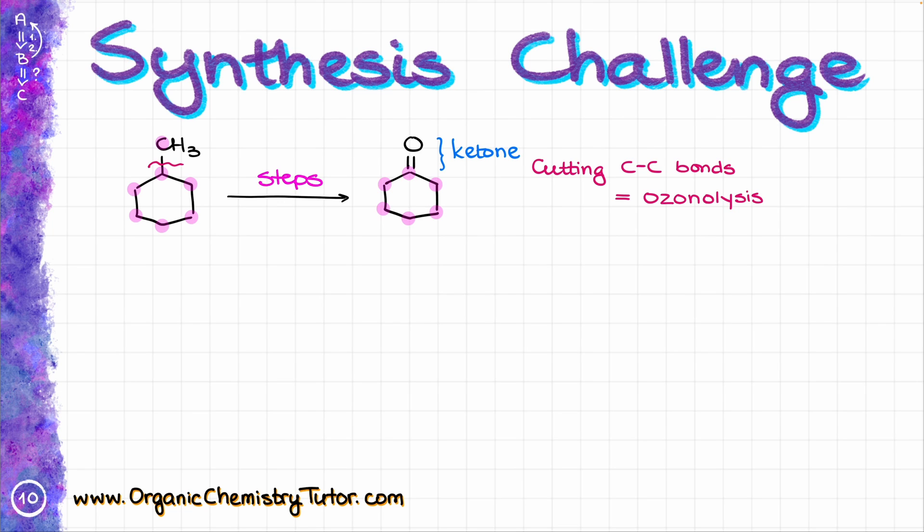So it is logical that the predecessor step to our ketone must be the corresponding alkene, which has undergone the ozonolysis cleavage, so the predecessor should be something that looks like this. So I have an alkene with a double bond, and that double bond is something that we cut off.